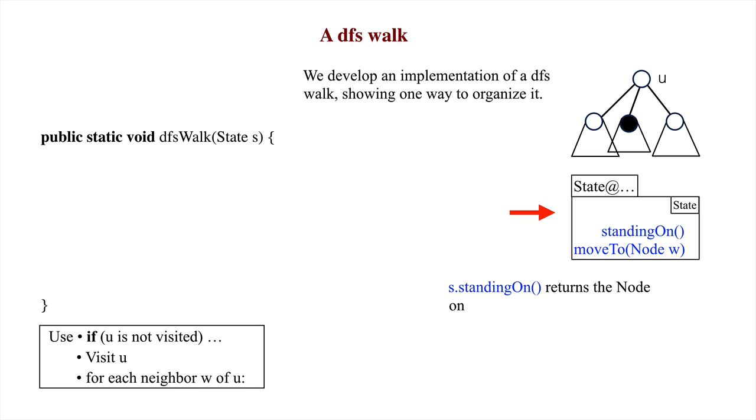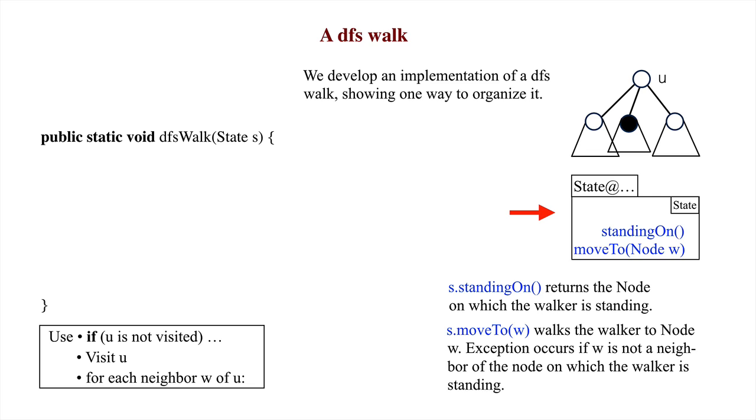Function s.standingOn returns the node on which the walker is currently standing. Procedure s.moveToW moves the walker to node W, but an exception occurs if W is not a neighbor of the node on which the walker is standing, if there is no edge from the node where the walker is standing to W.